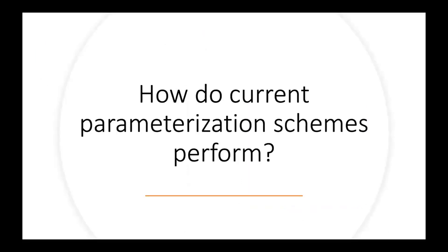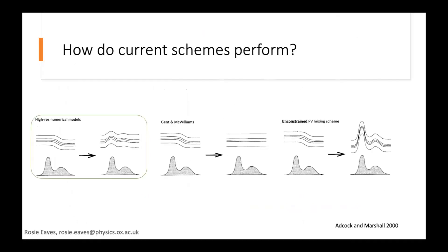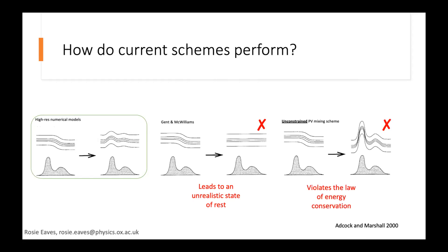How do current schemes perform at simulating these flows? This thought experiment — the only baroclinic example in this talk — starts with a baroclinic front: isopycnals over a topographic feature. High-resolution numerical models expect the isopycnals to somewhat follow the topography, as a smoothed version. Gent-McWilliams, the main parameterization used in climate models, completely flattens the isopycnals, giving an unrealistic state of rest. An unconstrained potential vorticity mixing scheme causes the isopycnals to lift completely over the topography contours, violating energy conservation — a point we'll return to.